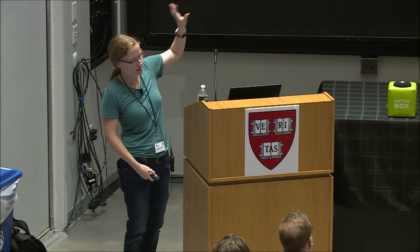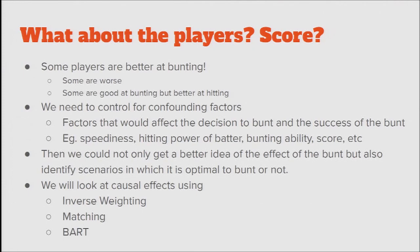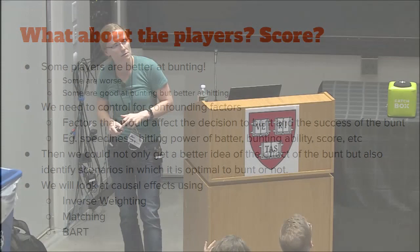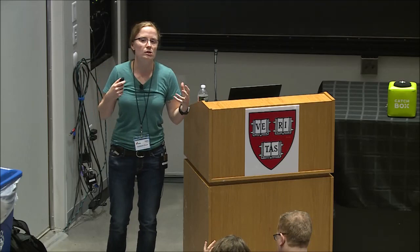How do we incorporate this kind of information to do this better? What about the players? What about the quality of the guy on base who's running, the quality of the batter — is he good at bunting, is he good at hitting? If he's bad at bunting and good at hitting, why would you ever have him bunt? We want to control for confounding factors — factors that affect both the decision to bunt and the success of that bunt. We want to look at the speediness of the runner, the hitting power of the batter, and the score. Controlling for all of these gives us more of a causal effect and helps identify scenarios where it might be optimal to bunt or not.